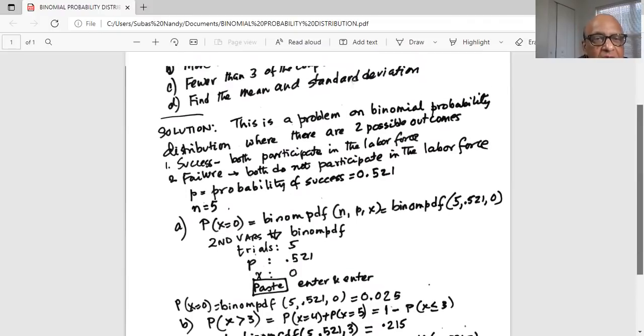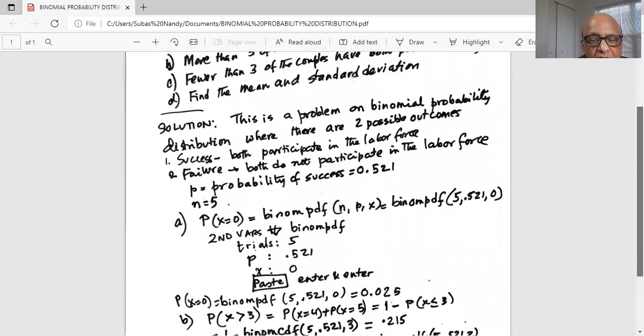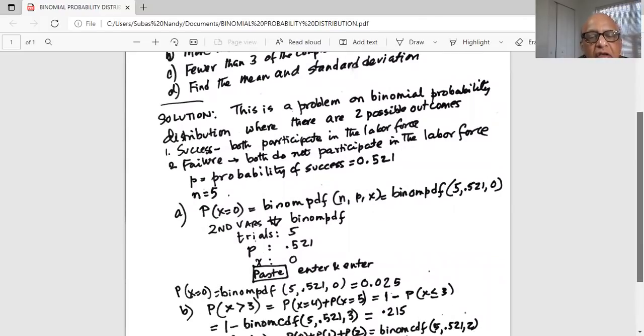Okay, part b. More than three of the couples have both persons working. More than three. That means we are interested in probability x, where x is the number of couples where both parties are participating, is greater than three. So we are basically interested in probability of x equals 4 plus probability of x equals 5, because both of them are greater than three and we have only five couples. So therefore starting from four we stop at five.